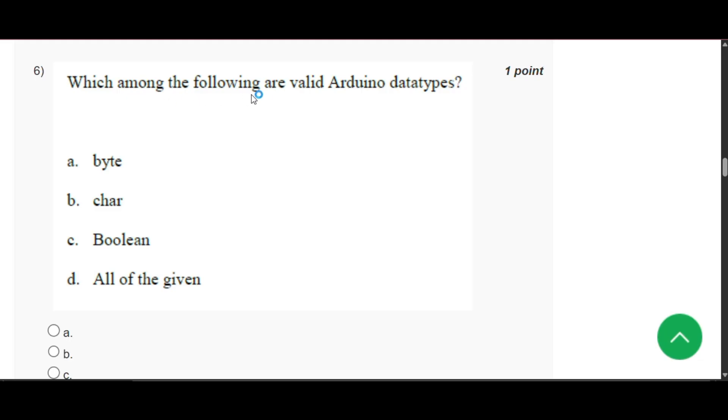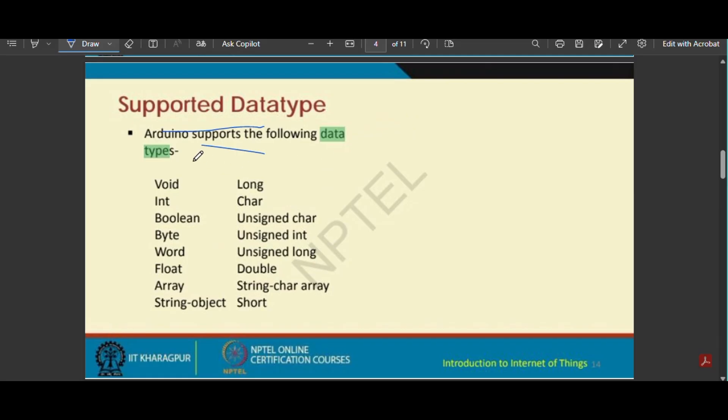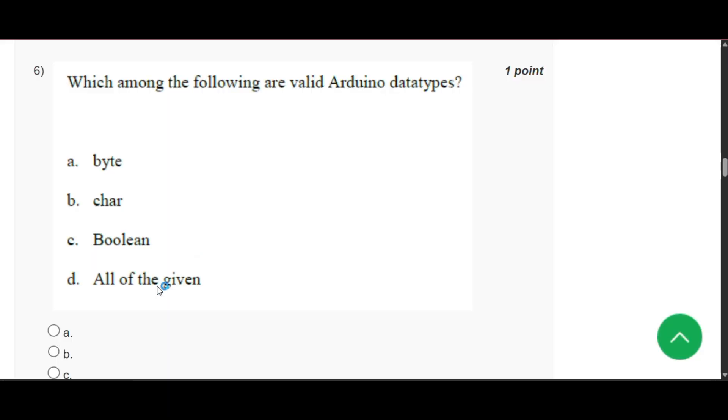Now question number 6: Which among the following are valid Arduino data types? Here you can see that Arduino supports following data: that is void, int, boolean, bytes. So the answer will be all of the given.